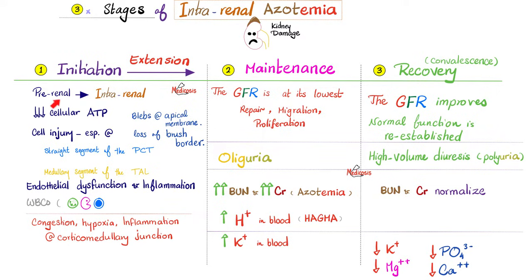During initiation and extension: it started as pre-renal and is becoming intrarenal. ATP in the cell is being depleted, blebs form in the membrane. The most vulnerable part is the proximal tubule — particularly the brush border, which is lost, so the kidney cannot reabsorb any of the good stuff. Then endothelial dysfunction and inflammation occur — neutrophils, macrophages, lymphocytes — with congestion, hypoxia, and inflammation at the corticomedullary junction. That is an important buzzword. The straight segment of the proximal tubule is another buzzword.